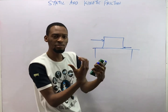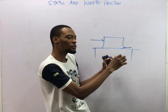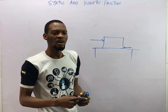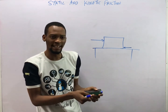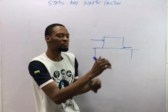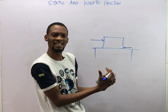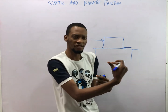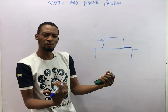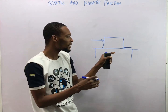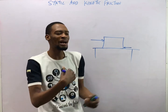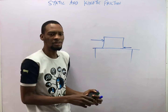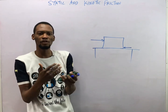When you push a body and it doesn't move, the force that is preventing the relative motion — that's static friction. On the other hand, if after pushing for some time the body begins to move and you keep pushing, the force that is stopping the motion while the body is moving is kinetic friction. Although the body is moving, something is still resisting it, so you need to continue applying force to overcome that resistance.